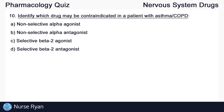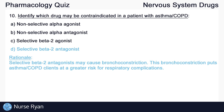Question number ten: identify which drug may be contraindicated in a patient with asthma or COPD. The answer here is D, a selective beta-2 antagonist. Selective beta-2 antagonists may cause bronchoconstriction, which puts asthma or COPD patients at a greater risk of respiratory complications.